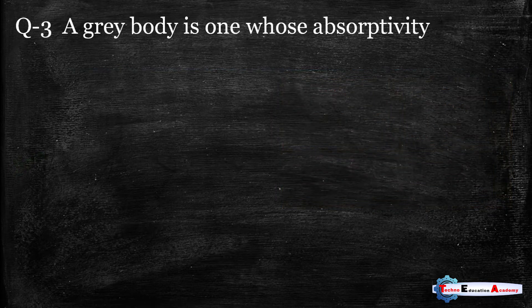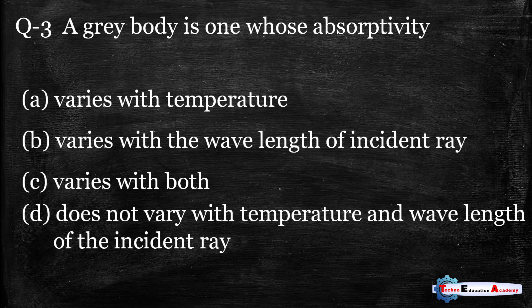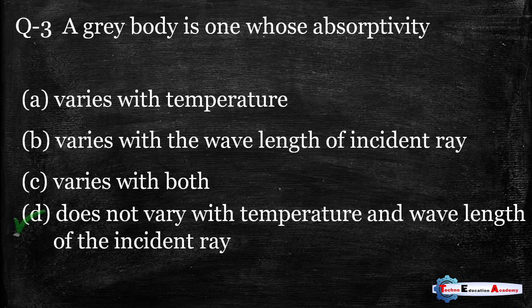Question number three: a gray body is one whose absorptivity — option A: varies with temperature, option B: varies with the wavelength of incident radiation, option C: varies with both A and B, option D: does not vary with temperature and wavelength of the incident radiation. The right answer is option D.